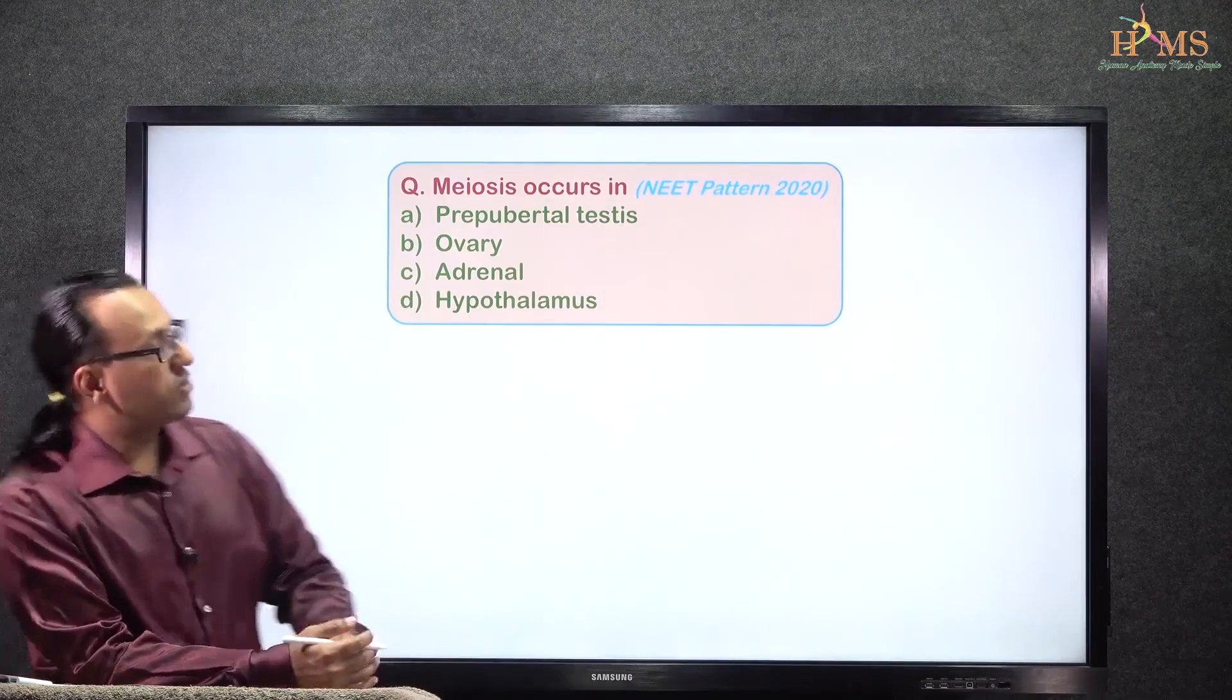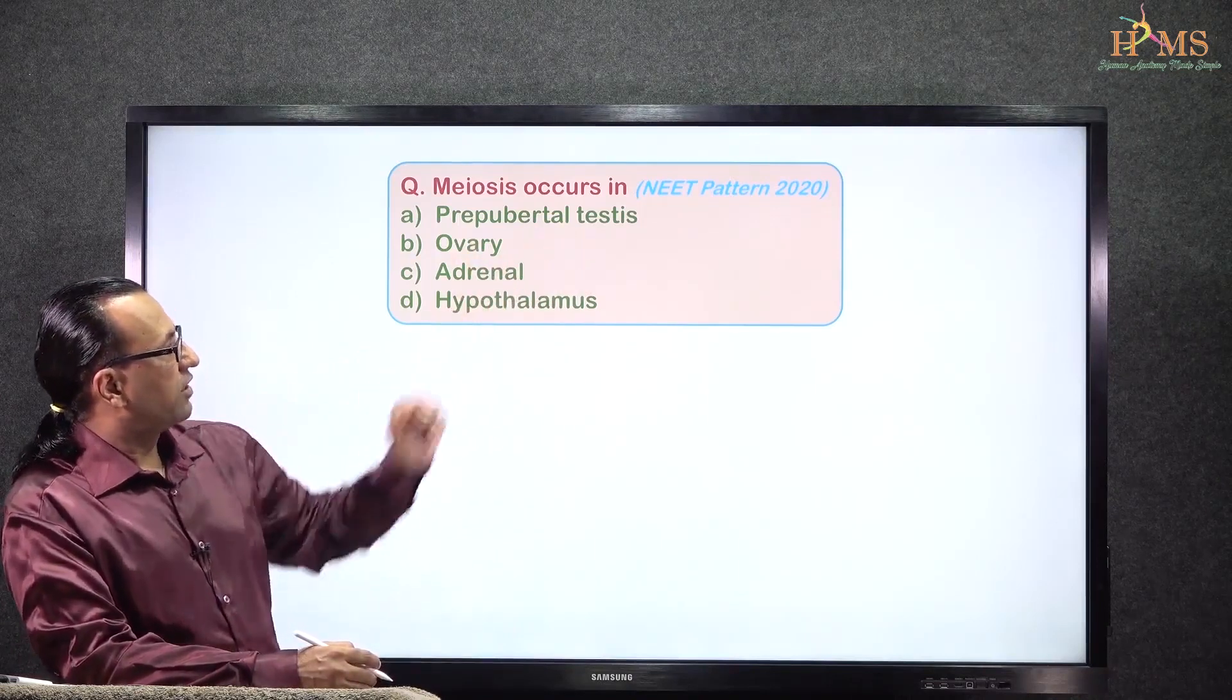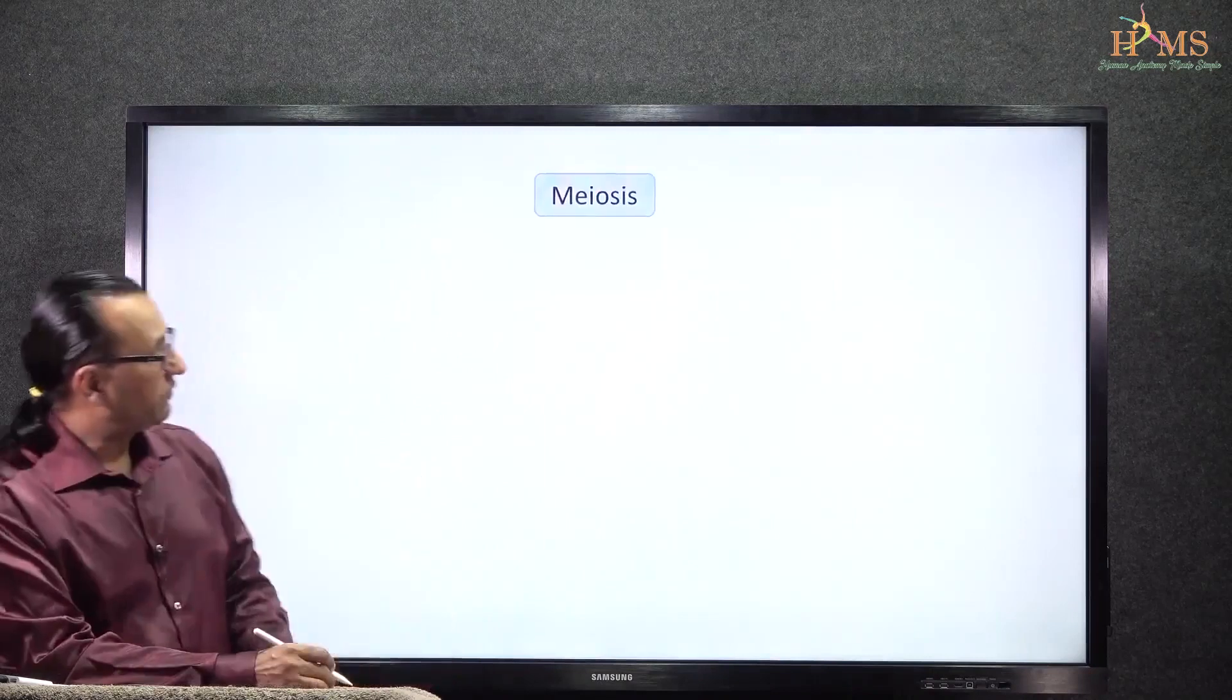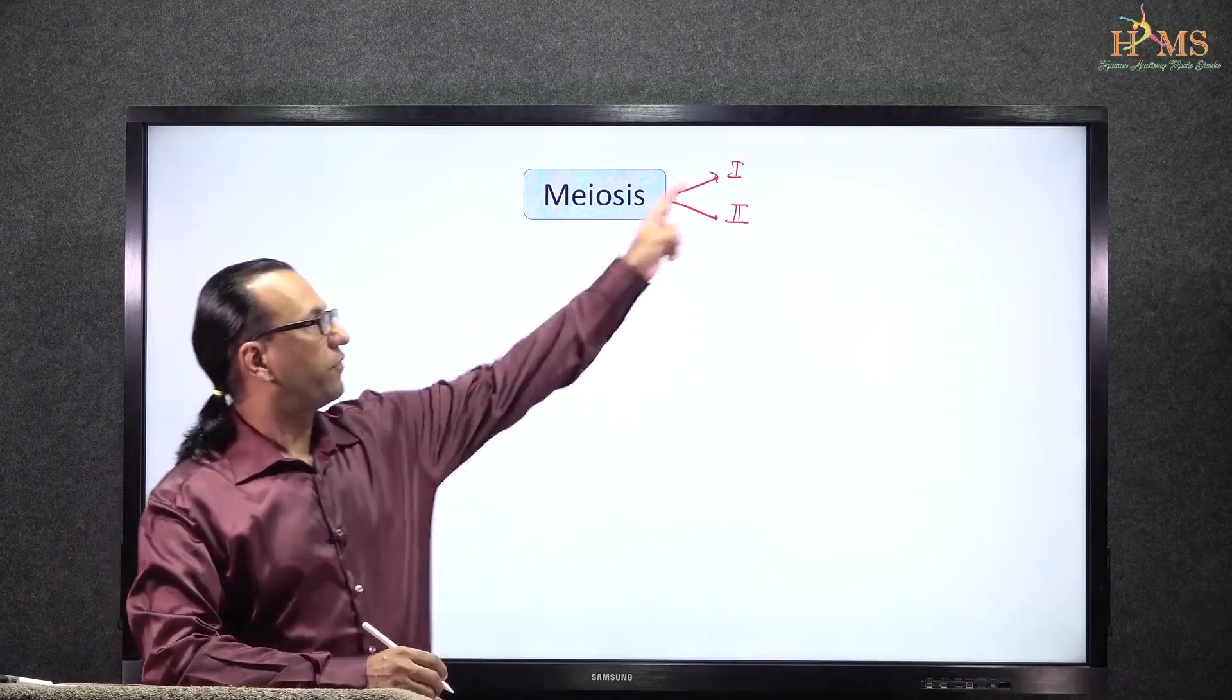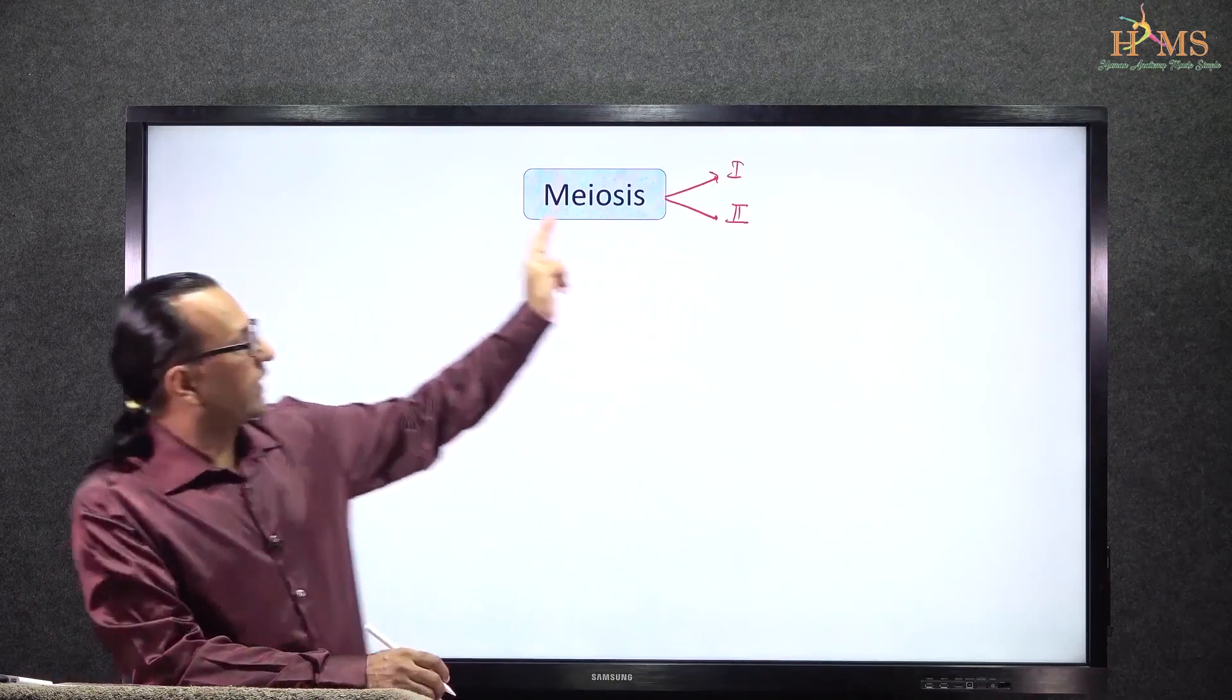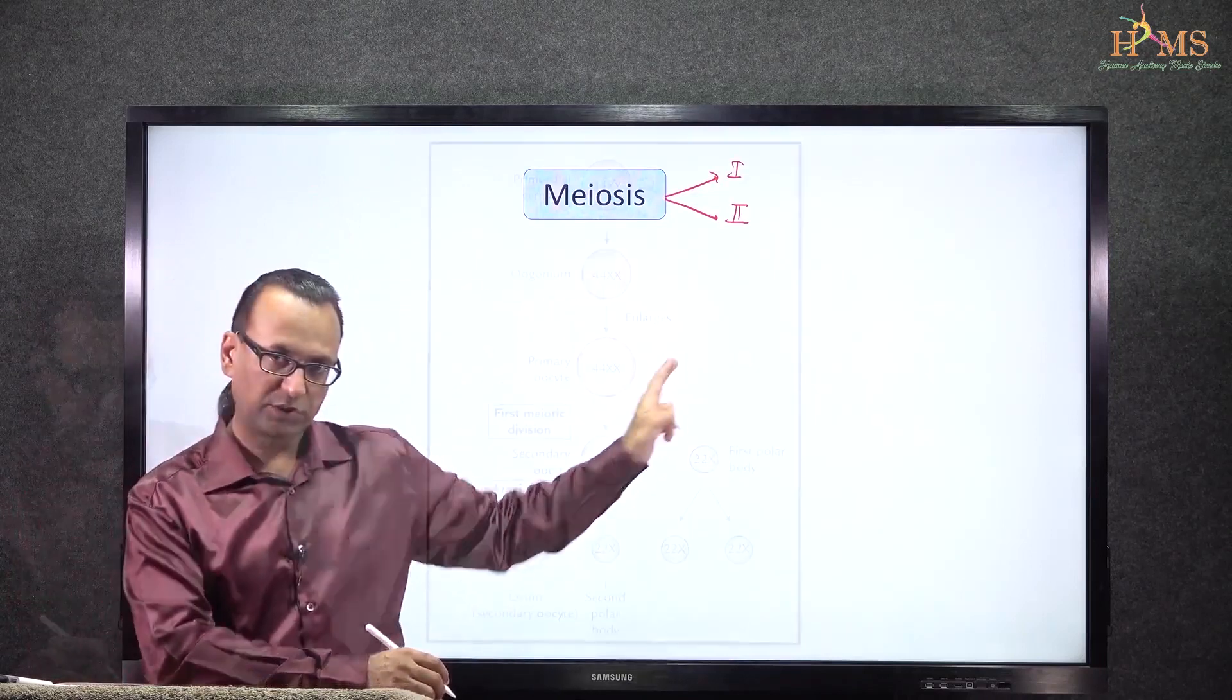The very first question asks where meiosis occurs, mentioning testis, ovary, adrenal, or hypothalamus. When it comes to meiosis, it is a two-stage process: meiosis one and meiosis two, but before that, mitosis has to take place. Let us look at the flow diagram first before we talk more about this.